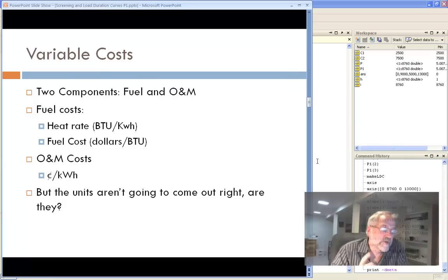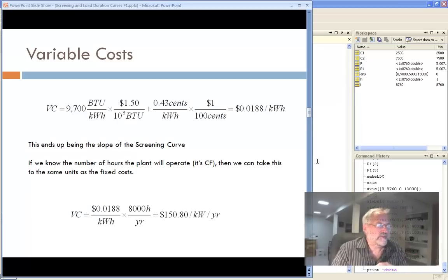Variable costs have two components. The fuel costs and the O and M costs, and the fuel costs themselves have two components. The heat rate, we talked about that, BTU per kilowatt hour. And the fuel cost, dollars per BTU. But if you start moving this forward, you see the units still aren't quite right. So let's just multiply that out. So here's your variable cost. There's your heat rate. Here's your fuel cost rate. So you multiply those together. Add to them the O and M rate. See I've divided by 100 to get rid of the cents. And I get this number, 1.88 cents per kilowatt hour, .0188 dollars per kilowatt hour.